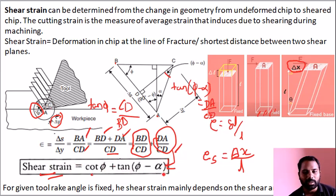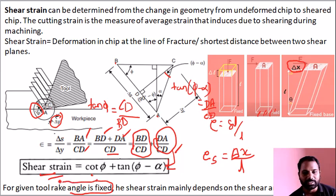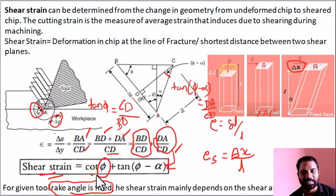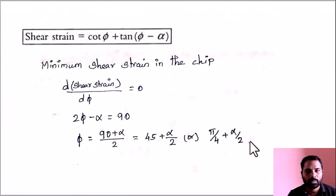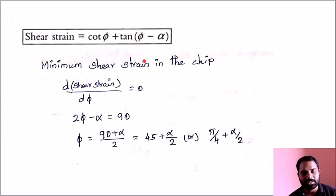This is the shear strain formula. In this formula, alpha (α) is fixed by the tool selection. Then shear strain depends on the shear angle φ. We can write shear strain as cot(φ) plus tan(φ minus α).